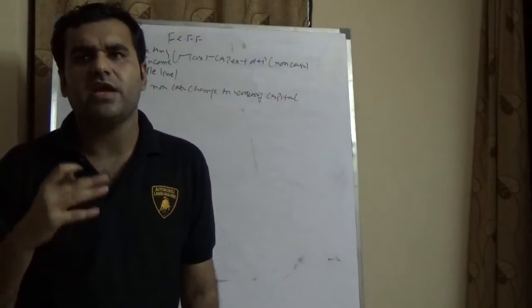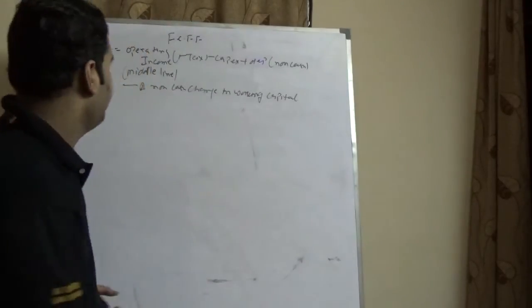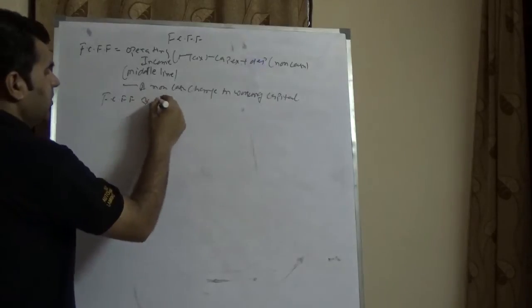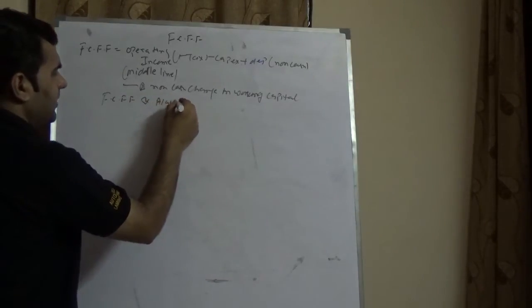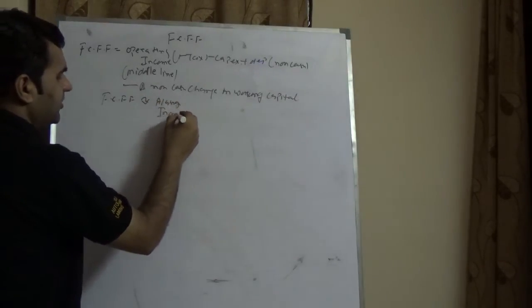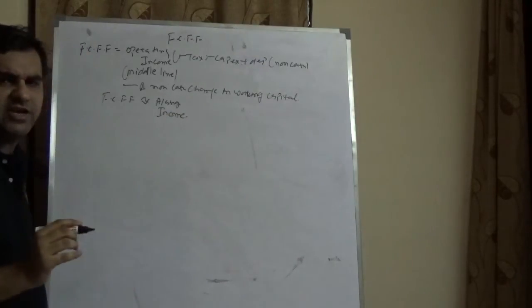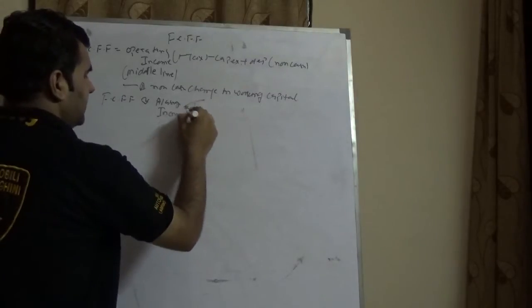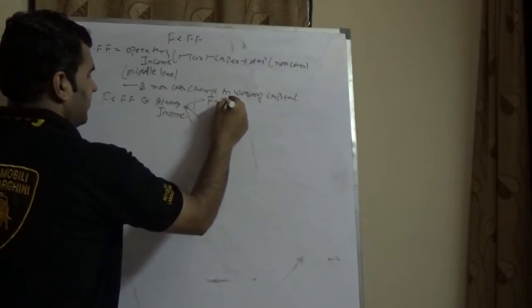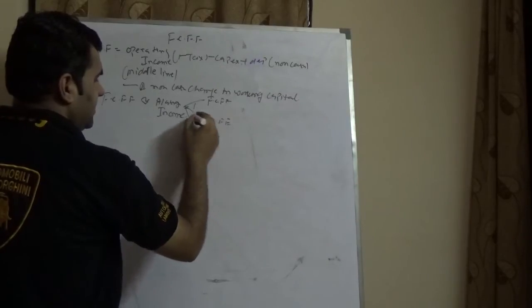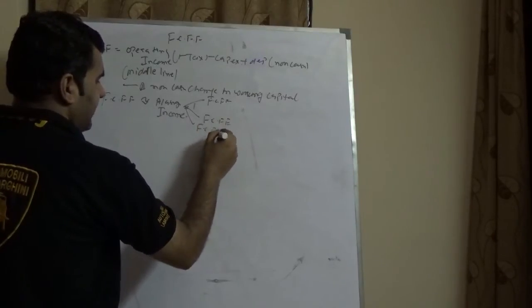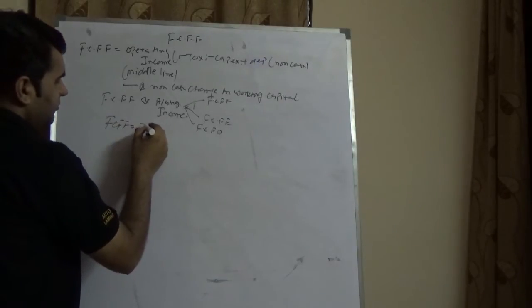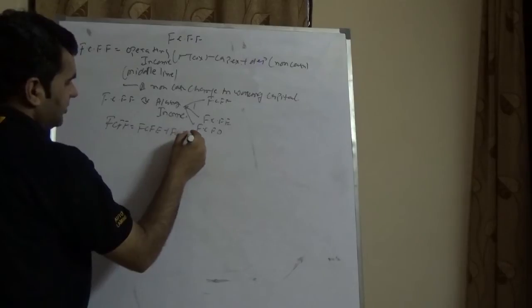Free cash flow to the firm refers to the total amount of cash which is with the firm — the free cash with the firm. Free cash flow to the firm is fully dependent upon accounting income, and we need to acknowledge the fact that accounting income plays a very significant role in calculating free cash flow to the firm, free cash flow to equity, and free cash flow to debt. Free cash flow to the firm equals free cash flow to equity plus free cash flow to debt.